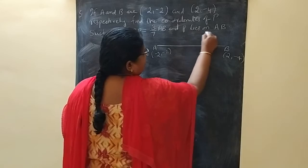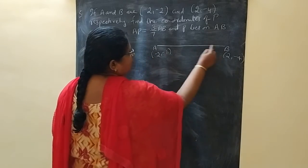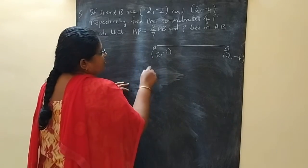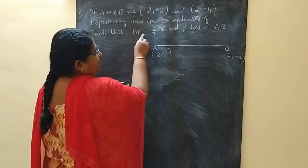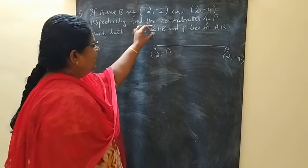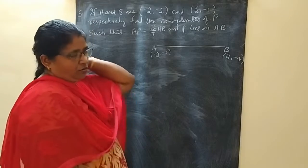P lies on AB. P is a point on AB. How is it coming? AP is equal to 3/7 part of AB.